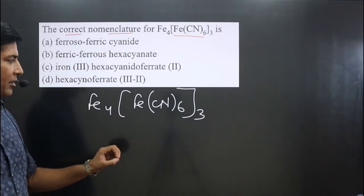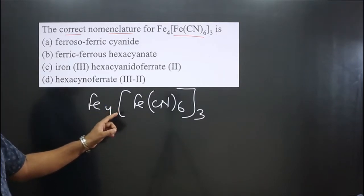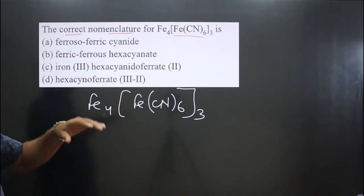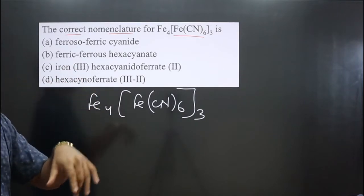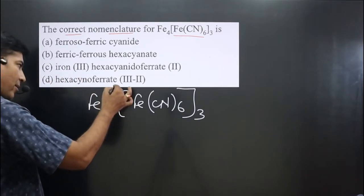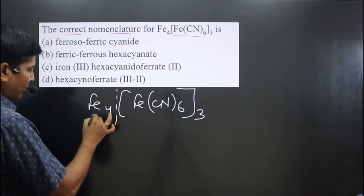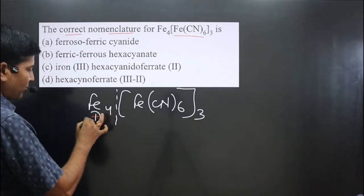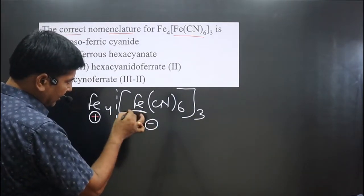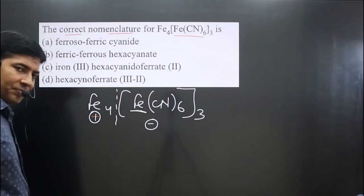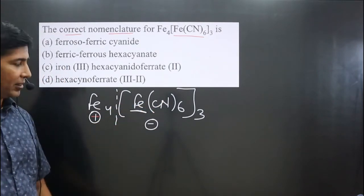Before naming the complex, always identify if the central element in the complex is present in the cationic part or in the anionic part. We can break this complex from here because this is the counter ion. The first part is positive followed by negative, so the central element is present in the anionic part.